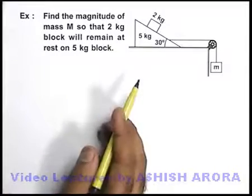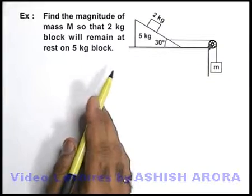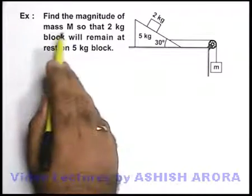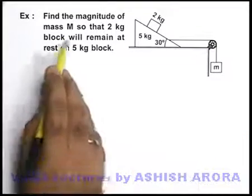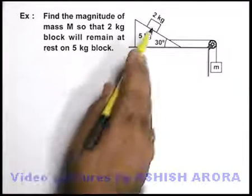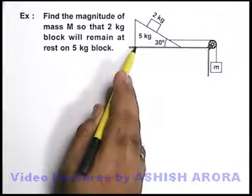Similar to the previous example, we take one more example. Here we are required to find the magnitude of the hanging mass M so that this 2 kg block will remain at rest on this 5 kg block, which is a triangular wedge block.